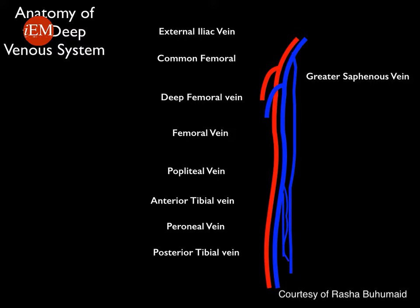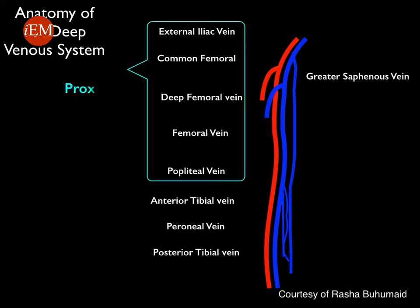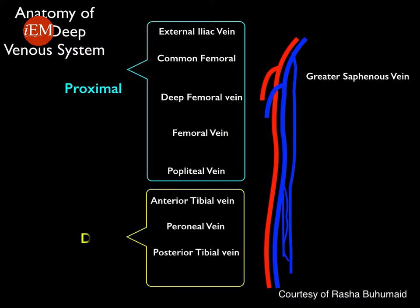It's important to understand that the deep venous system is divided into proximal and distal portions. The proximal deep venous system extends from the external iliac vein all the way to the popliteal vein, while the distal system comprises the three tributaries of the popliteal vein. When performing the two-zone ultrasound technique, you only evaluate the deep venous system for proximal DVT — not for isolated distal calf vein clots.